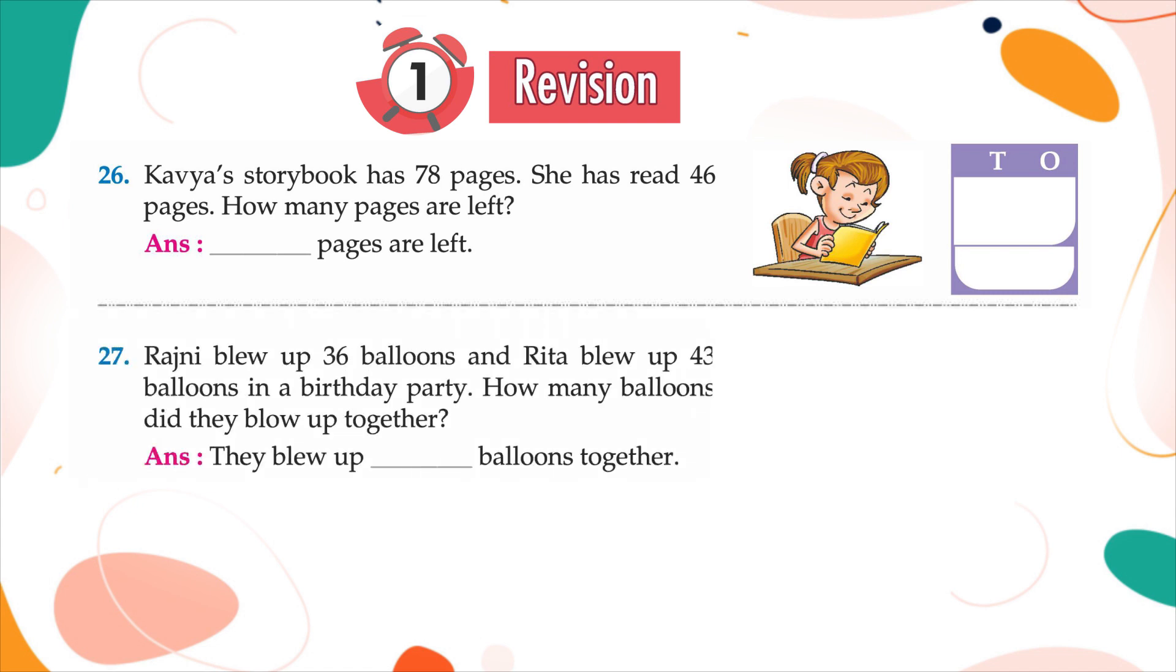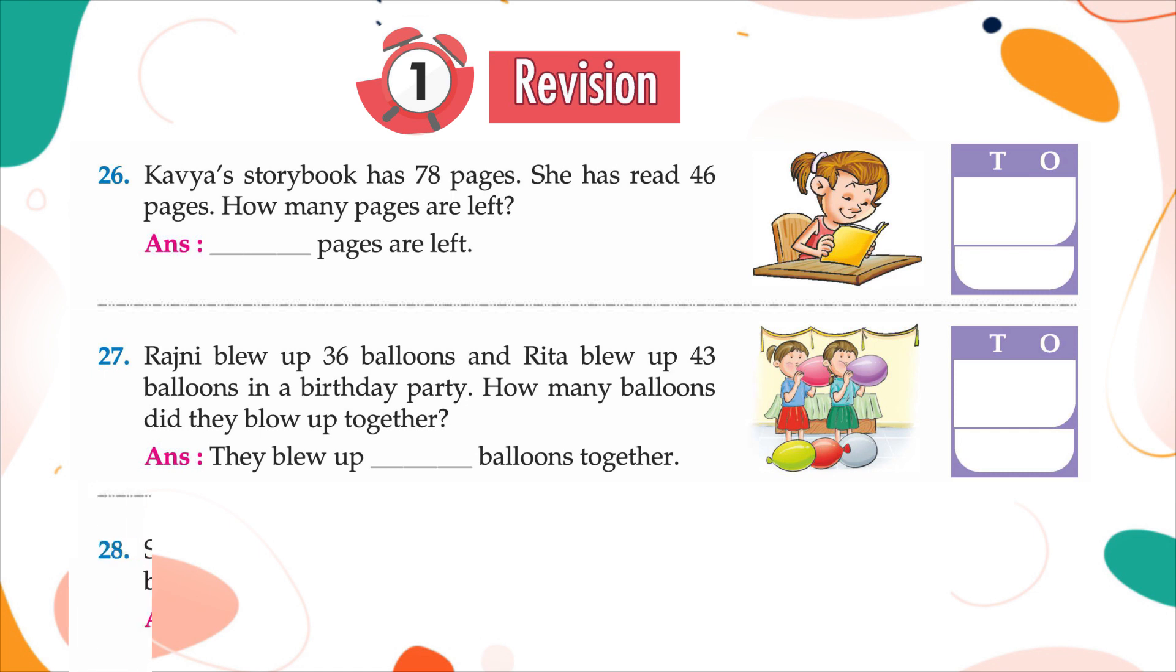27. Rajini blew up 36 balloons and Rita blew up 43 balloons in a birthday party. How many balloons did they blow up together? They blew up dash balloons together.